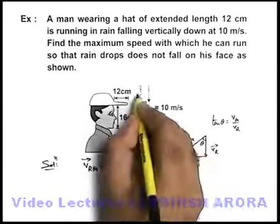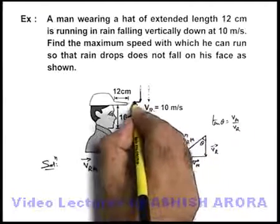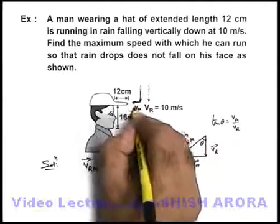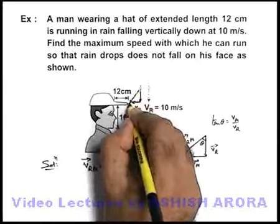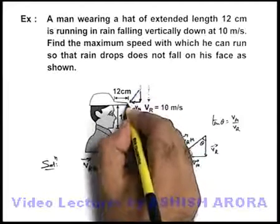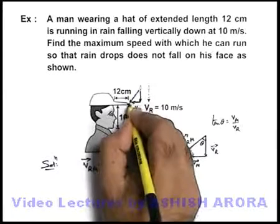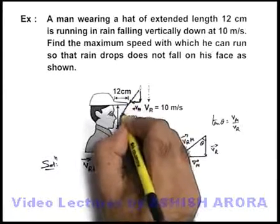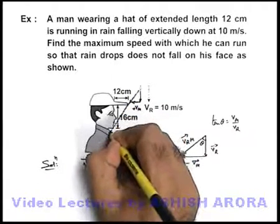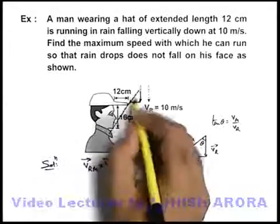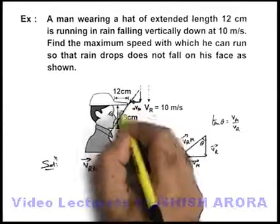So what we want, when from this v_r we subtract this v_m, the resultant direction should be such that the rain drop which is grazing the top front end of the hat should just graze the bottom end of the face. Then only we can say that this rain drop will not wet his face.